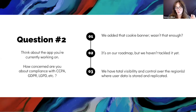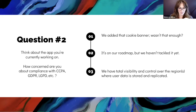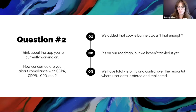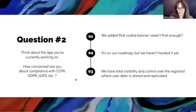Option two is data compliance on the roadmap but we're not quite there yet. How about the third option — total visibility and control over where data is stored and replicated? It looks like two votes there. That's definitely where you want to be.